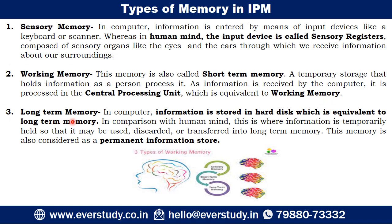Next comes long-term memory, where information is stored for later purpose. This is the final stage in the Information Processing Model. In a computer, information is stored on the hard disk, which is equivalent to long-term memory. In the human mind, information is temporarily held in working memory so that we can use it, transfer it, or discard it into long-term memory, which is considered permanent storage.